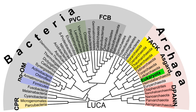It has been suggested that the bacterial order Planctomycetes has a membrane around their nucleoid and contains other membrane-bound cellular structures. However, further investigation revealed that Planctomycetes cells are not compartmentalized or nucleated, and like other bacterial membrane systems are all interconnected. Prokaryotic cells are usually much smaller than eukaryotic cells. Therefore, prokaryotes have a larger surface area-to-volume ratio, giving them a higher metabolic rate, a higher growth rate, and as a consequence, a shorter generation time than eukaryotes.